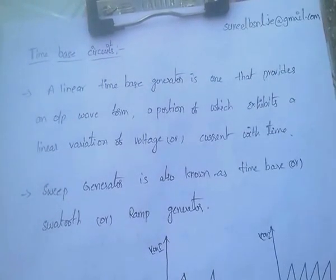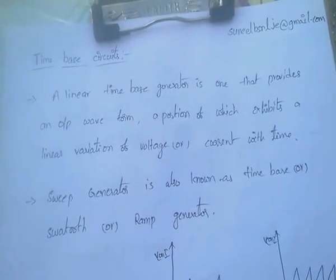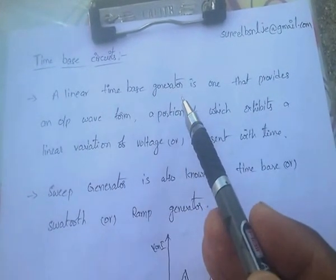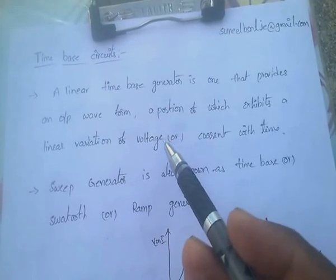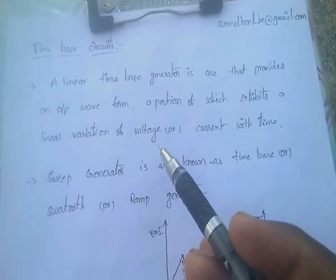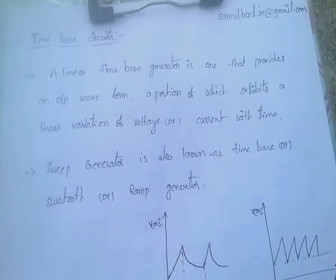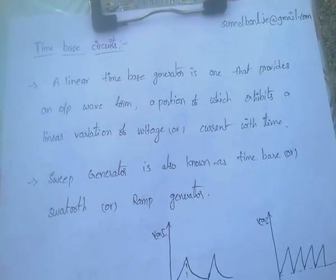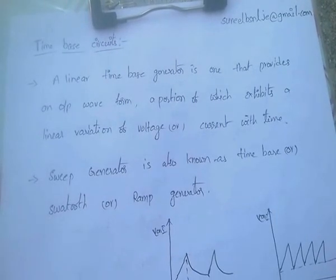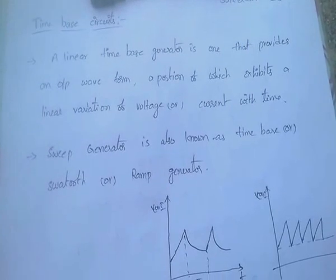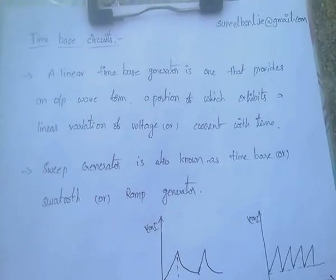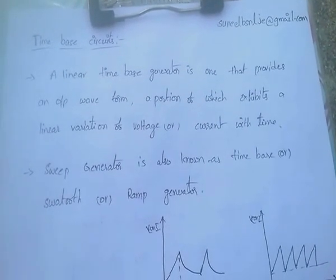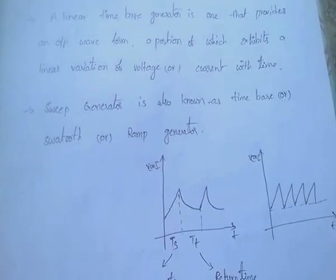Hi friends, in this video I am going to discuss electronic devices and circuits — time-based circuits. A linear time-based generator is one that provides an output waveform, a portion of which exhibits a linear variation of voltage or current with time. A sweep generator is also known as a time-based generator, sawtooth wave generator, or ramp generator.